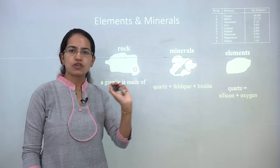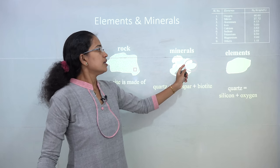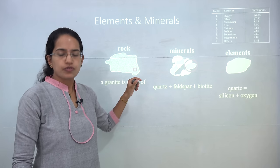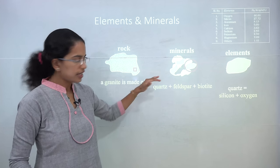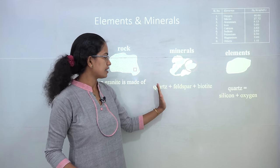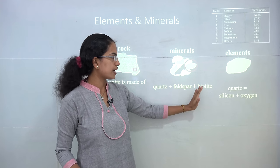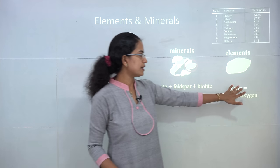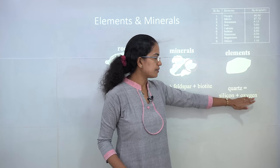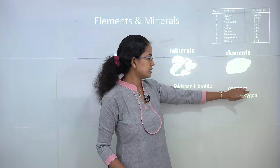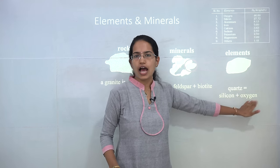Each of these rocks contains various minerals. These minerals are made up of two or more elements or compounds. The minerals that can be seen here could be quartz, feldspar, or biotite. If we take out one mineral, you have the various elements that could be seen.